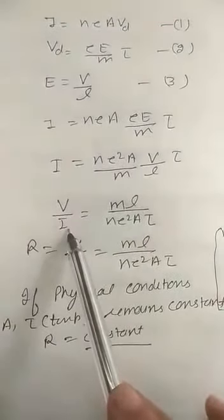What is tau? Tau is the relaxation time. And capital E is equal to V by L. Now these are the three equations. We put the value for the Vd from this equation, and the expression for the E that is V by L we put this. And by this equation if we find V upon I, that will be equal to mL upon ne²A into tau. So resistance R is equal to V upon I, and that is equal to mL upon ne²A into tau.